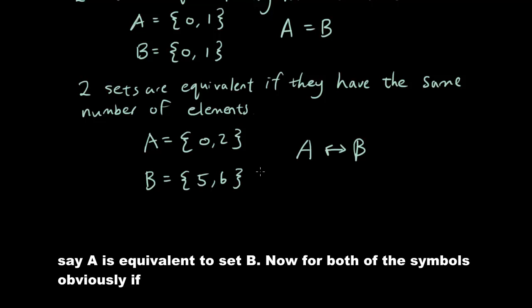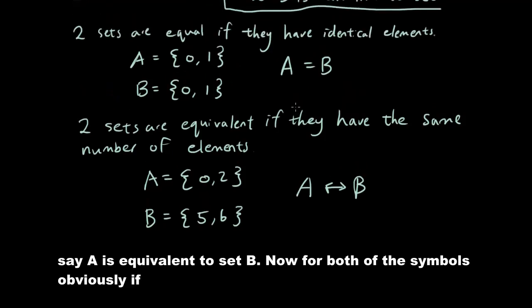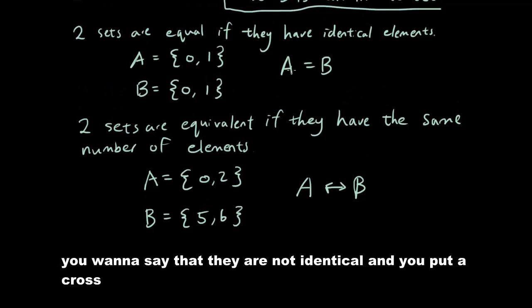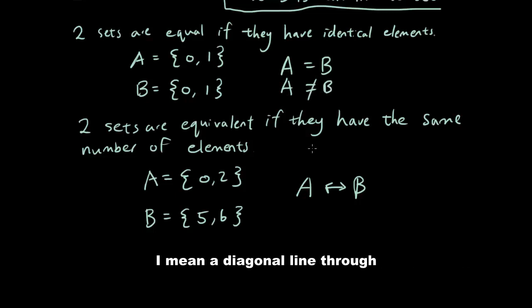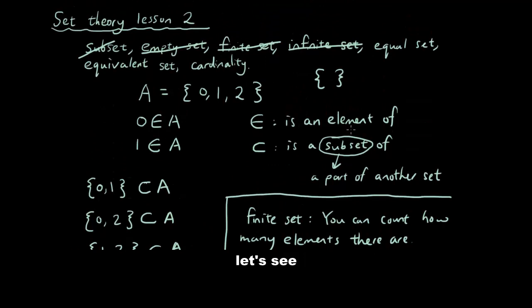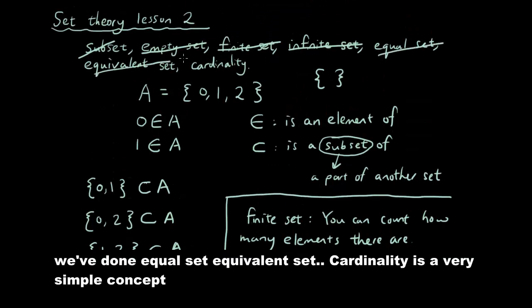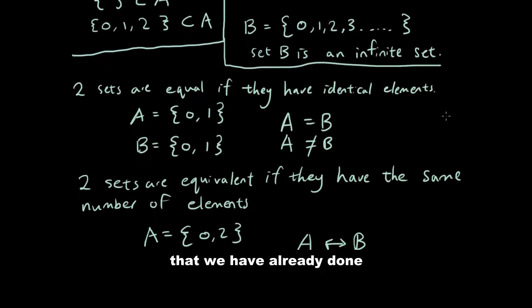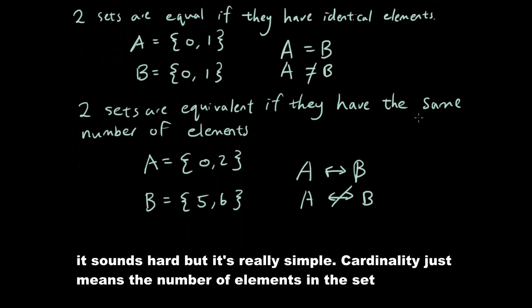The symbol equivalent is a double arrow. Set A is equivalent to set B. For both symbols, if you want to say they are not identical, you put a diagonal line through the symbol. The same thing with not equivalent - you put a line through it.